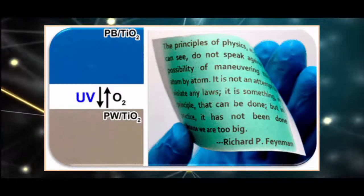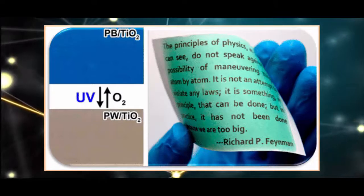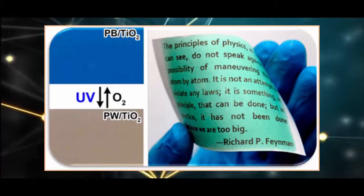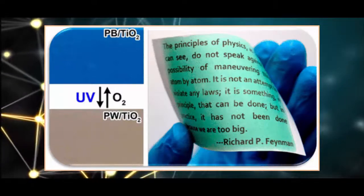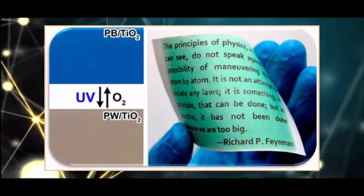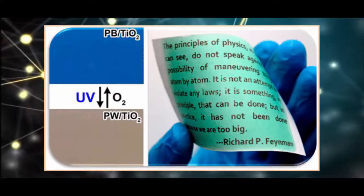Two types of nanoparticle are combined for the new coating: Prussian blue, a blue pigment used in paints that turns colorless when it gains electrons, and titanium dioxide, TiO2, a photocatalytic material that speeds up chemical reactions in response to UV light.